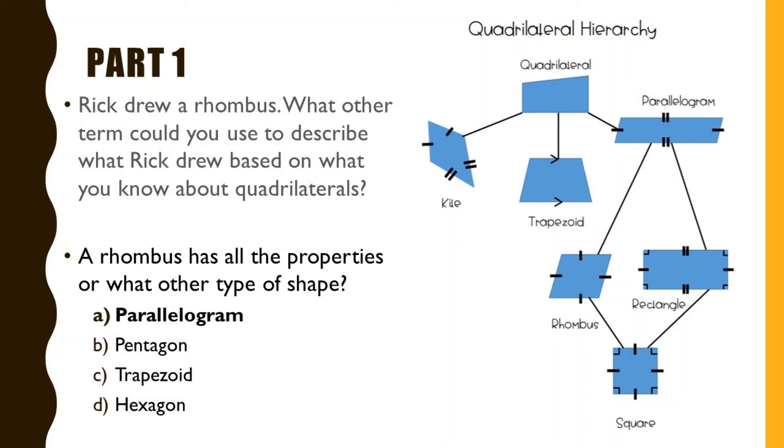A rhombus has all the properties of a parallelogram which is why it falls under that subcategory of quadrilaterals. So if Rick drew a rhombus, you could also describe what he drew as a parallelogram.